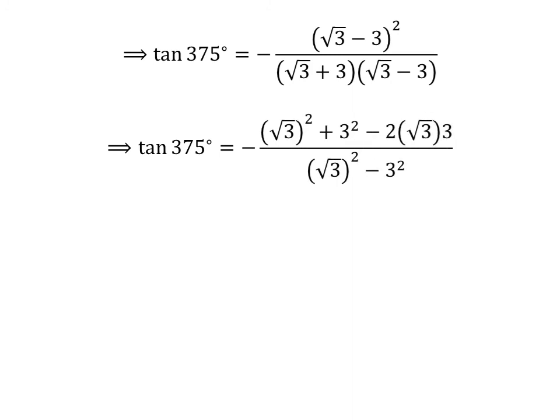Let us expand the square of square root of 3 minus 3. In the numerator we have square of square root of 3 plus square of 3 minus 2 times square root of 3 times 3. In the denominator, square root of 3 plus 3 times square root of 3 minus 3 is square of square root of 3 minus square of 3. Since square of square root of 3 is 3 and square of 3 is 9, tangent of 375 degrees equals minus 3 plus 9 minus 6 times square root of 3, upon 3 minus 9.